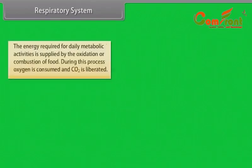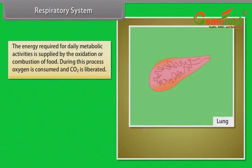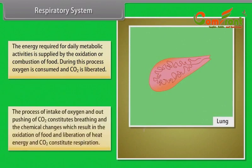Respiratory System: The energy required for daily metabolic activities is supplied by the oxidation or combustion of food. During this process, oxygen is consumed and CO2 is liberated. The process of intake of oxygen and expulsion of CO2 constitutes breathing, and the chemical changes resulting in the oxidation of food and liberation of heat energy and CO2 constitutes respiration.